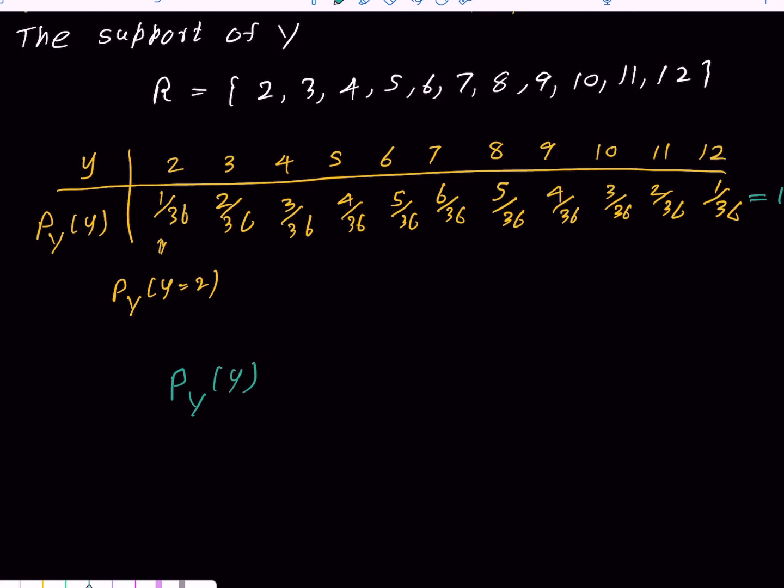Then, we can write this as a formula. P_Y(y) equals 1 over 36 times the absolute value of 6 minus absolute value of 7 minus y, for y values 2, 3, up to 12. Otherwise, it is 0.